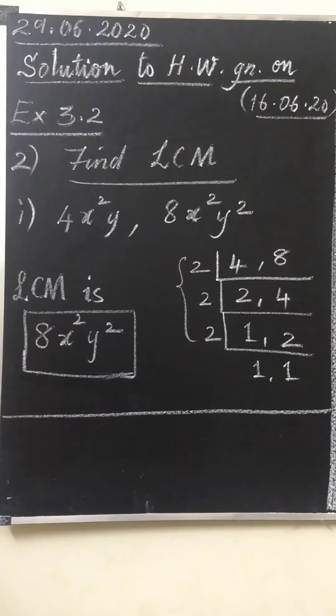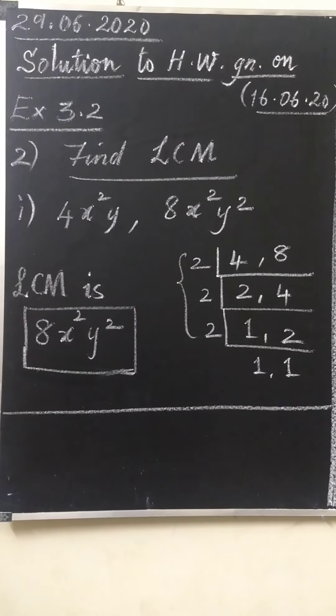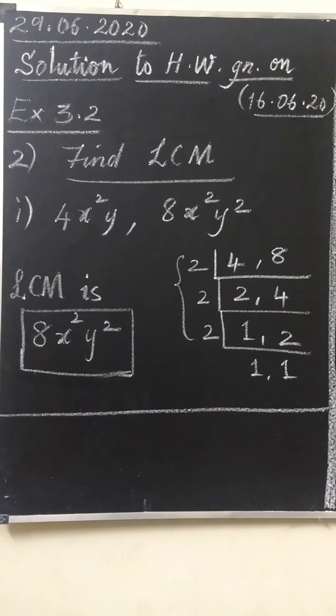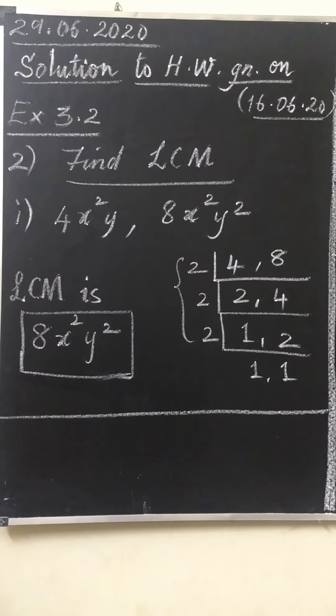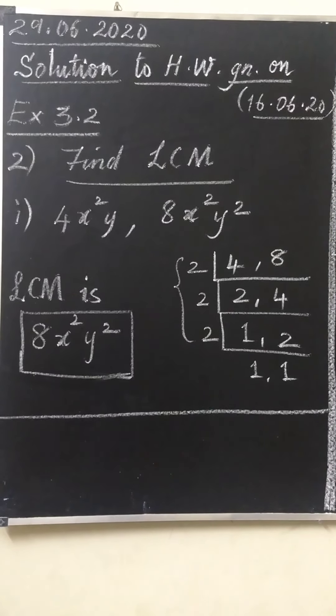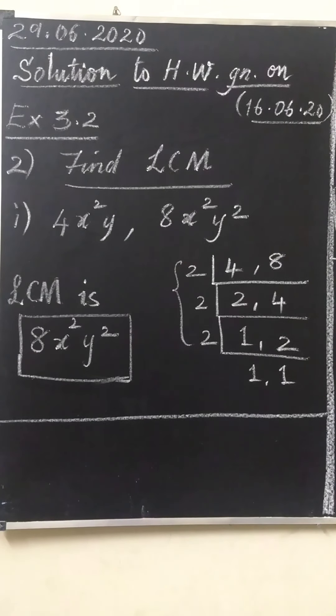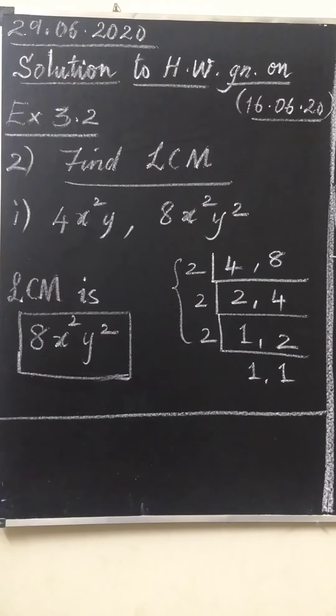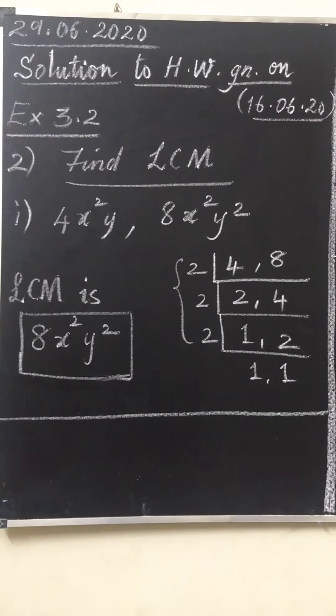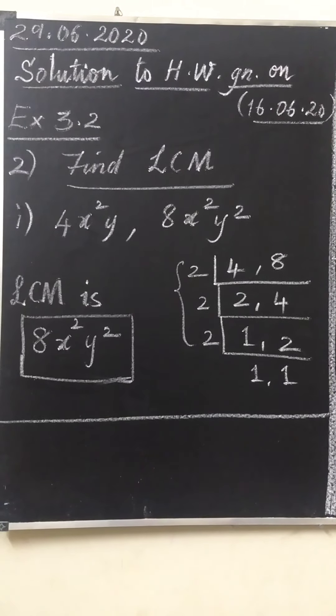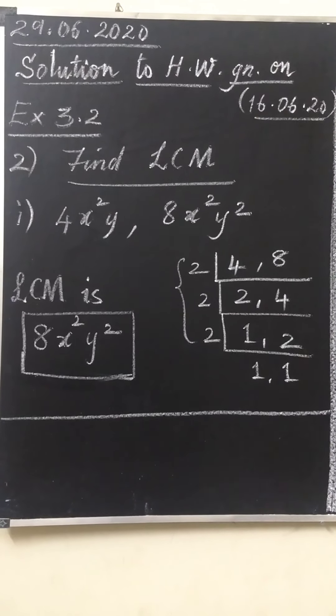For LCM of polynomials: for numbers we have to use the prime factorization method. For the variables, what should be selected? The variable with the highest power should be selected.